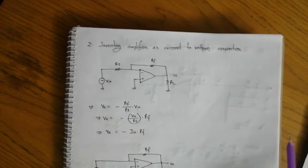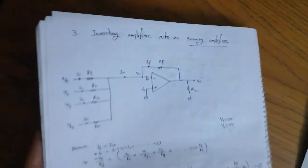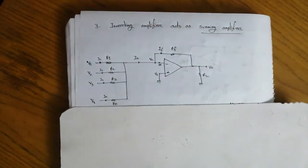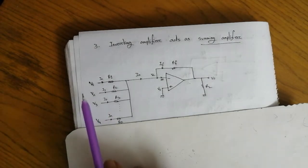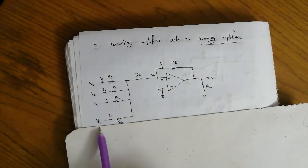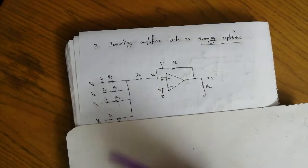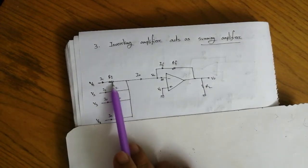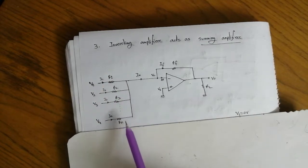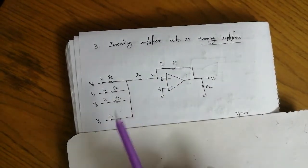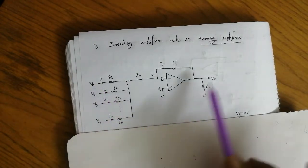Now we look at the summing amplifier. The summing amplifier has multiple inputs: V1, V2, V3, ... Vn, connected through resistors R1, R2, R3 ... Rn respectively. There is a feedback resistor Rf, and the output is V0.